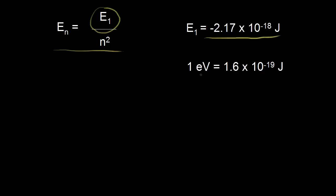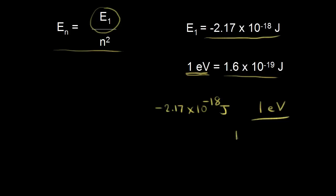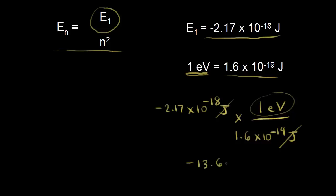Let's go ahead and convert that into electron volts — it just makes the numbers easier to work with. One electron volt is equal to 1.6 times 10 to the negative 19 joules. So if I take negative 2.17 times 10 to the negative 18 joules and multiply by the conversion factor, the joules cancel and give me electron volts. Doing that math, you get negative 13.6 electron volts.